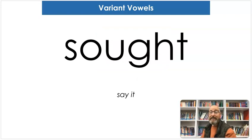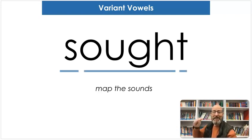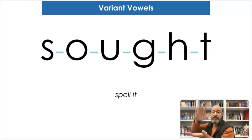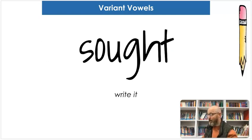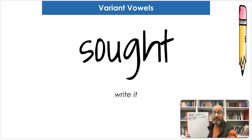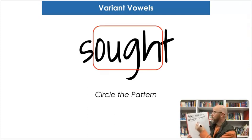Our next word is sought. If you're looking for something, you sought it out — it's past tense. Let's map the sounds: S-A-L-T. Sought. Spell it: S-O-U-G-H-T. Sought. And let's write it: S-O-U-G-H-T. And what makes the "aw" sound? O-U-G-H. That's correct. Let's circle it.